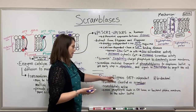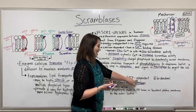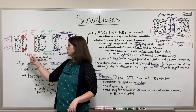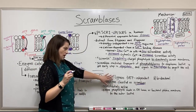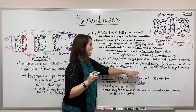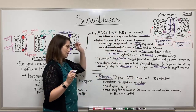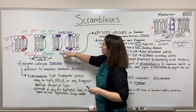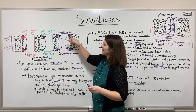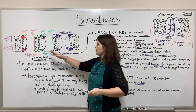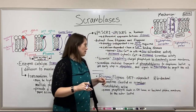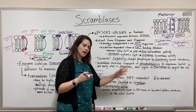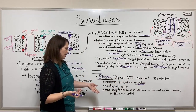Biogenic flip-ases have some things in common with scramblases. They are ATP independent — remember that regular flip-ases hydrolyze ATP and require it to do their job, whereas biogenic flip-ases require no ATP, like scramblases. They are also bi-directional, moving phospholipids in either direction across the membrane, whereas regular flip-ases only move from the exoplasmic to the cytoplasmic side. In these ways, biogenic flip-ases are very similar to scramblases.